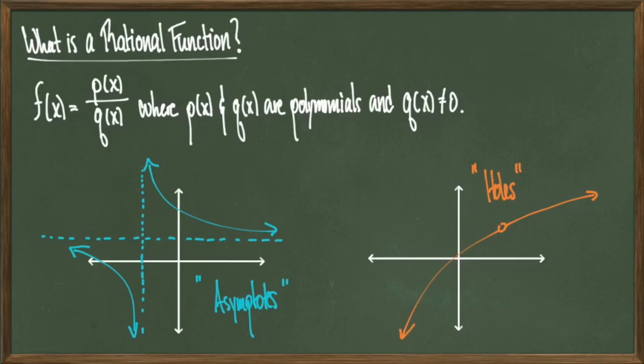Asymptotes represent different types of so-called discontinuities, at which point our graph is not necessarily connected. In other words, I could not draw the graph on the left with one continuous pen stroke — I would have to pick it up and start from somewhere else. Same thing with the graph on the right: I have to skip a point in the plane.